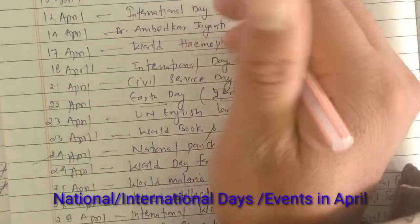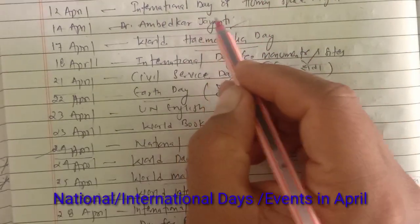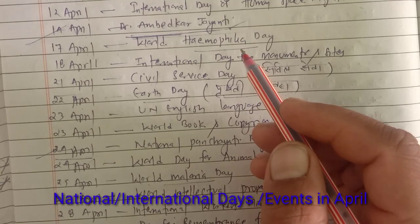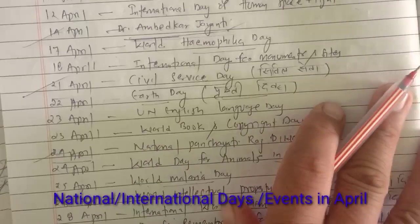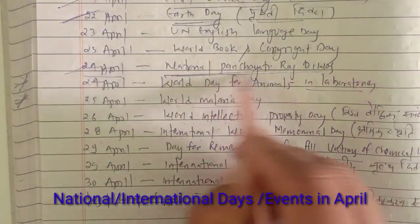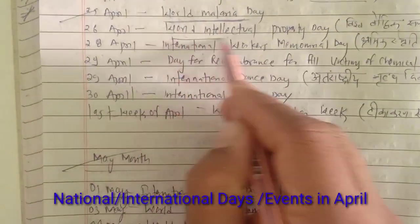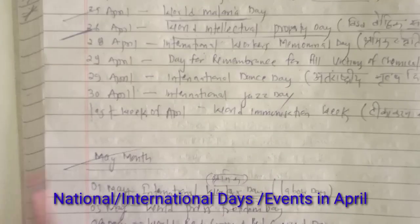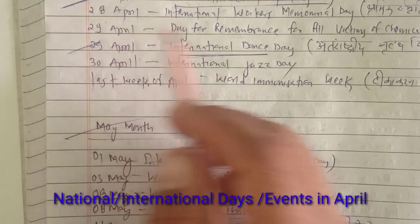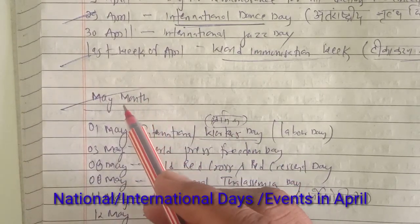To recap the key important days: National Maritime Day on 5th April, World Health Day on 7th April, Dr. Bhimrao Ambedkar Jayanti on 14th April, Civil Services Day on 21st April, Earth Day on 22nd April, National Panchayati Raj Divas on 24th April, World Malaria Day on 25th April, International Dance Day on 29th April, and World Immunization Week in the last week of April. These are the key days and events from the month of April.